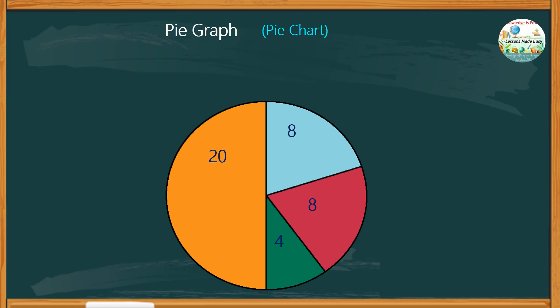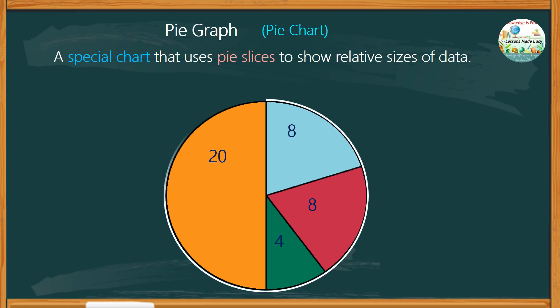What do you know about it? A pie chart is a special chart that uses pie slices to show relative sizes of data. It is a type of graph in which a circle is divided into sectors that represent a proportion of the whole.